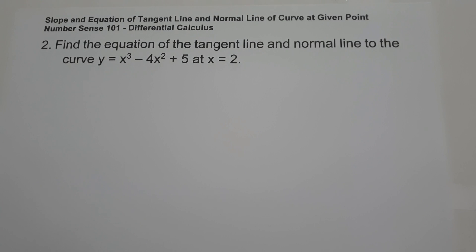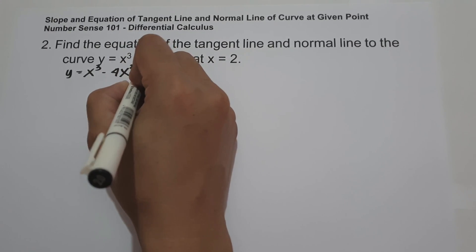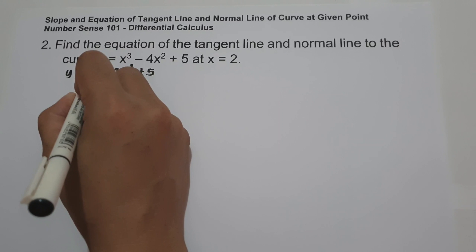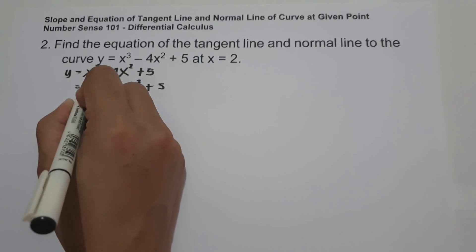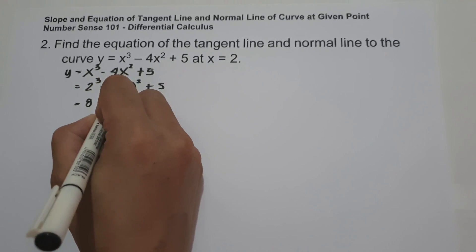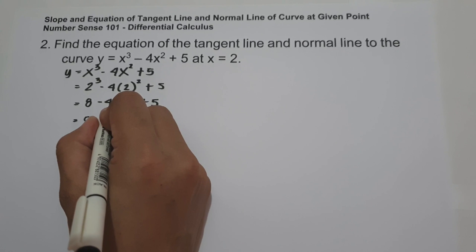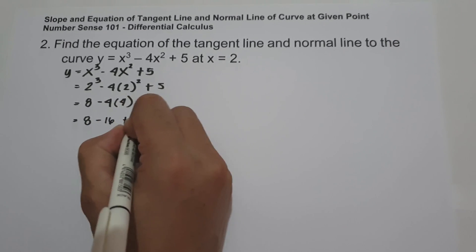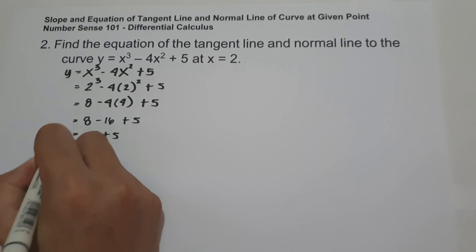On example number 2, find the equation of the tangent line and normal line to the curve y equals x cubed minus 4x squared plus 5 at x equals 2. Since we don't have a value for y, we first find it by substituting x = 2: 2³ minus 4 times 2² plus 5 equals 8 minus 16 plus 5, which is negative 3.